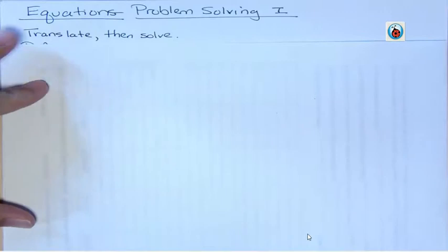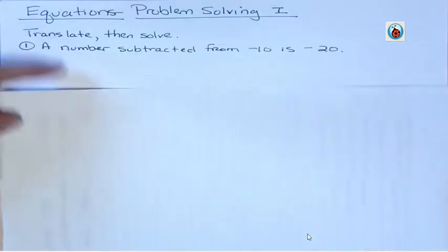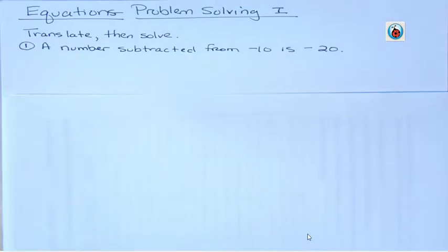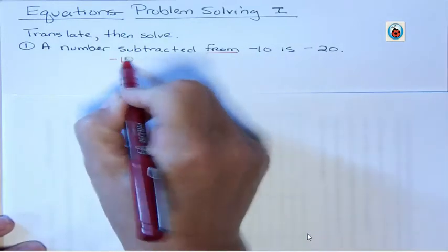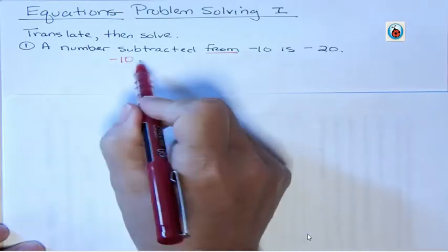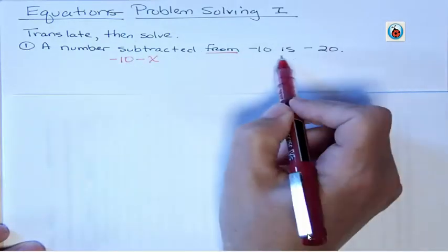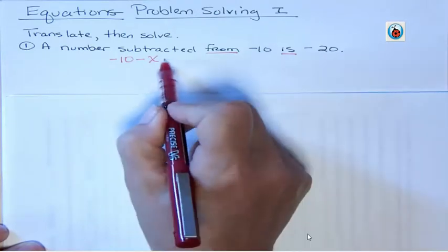The first one's not a word problem just so much as something written that needs to be translated. A number subtracted from negative 10 is negative 20. So we have some number, I'm going to call it x, and we're subtracting it from negative 10. That means that negative 10 has to go first. And we're subtracting some number, I'll call it x, and that is, is is like our verb, so it's an equal sign there, is negative 20.